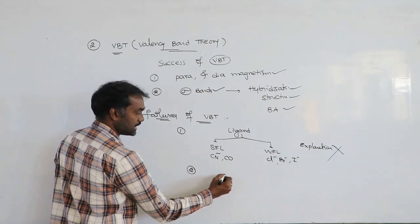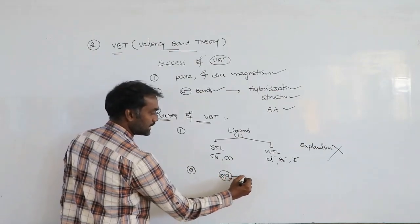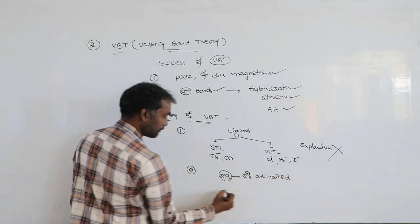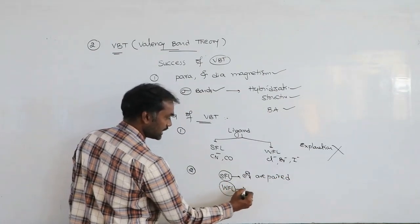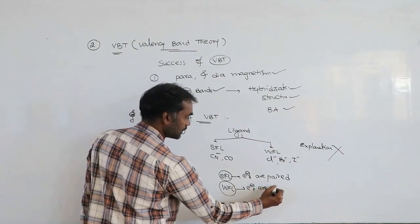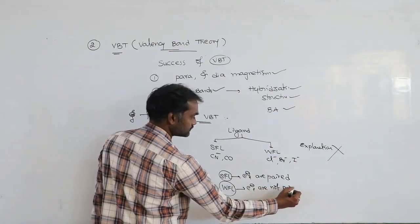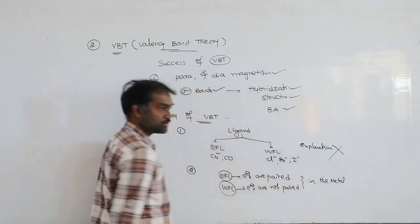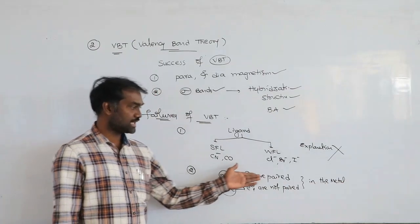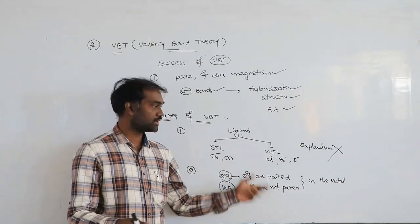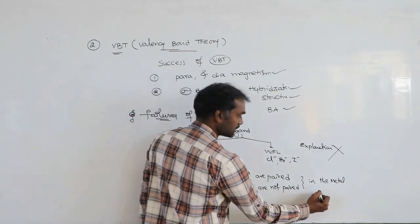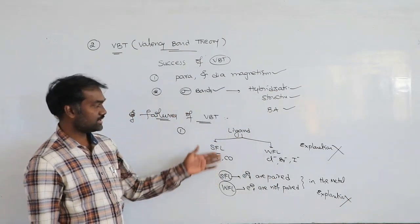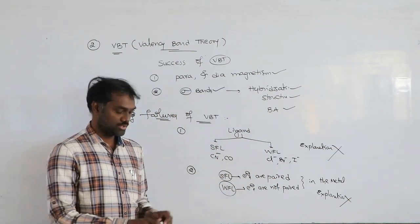Second failure: in the presence of a strong field ligand, electrons are paired; in the presence of a weak field ligand, electrons are not paired in the metal. Scientists ask why these electrons are paired here and why they are not paired there. This is also not explained by VBT. These are the failures.